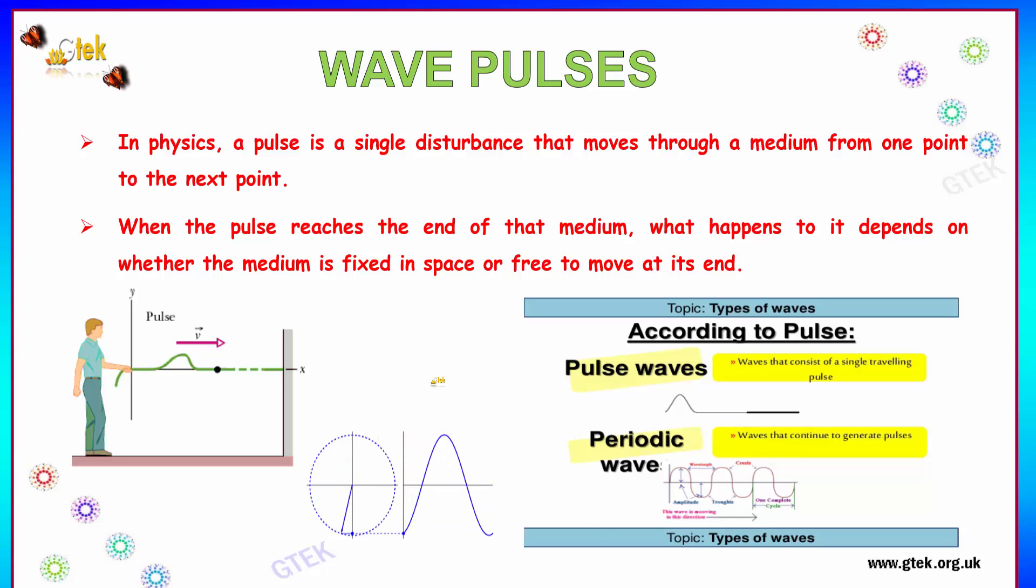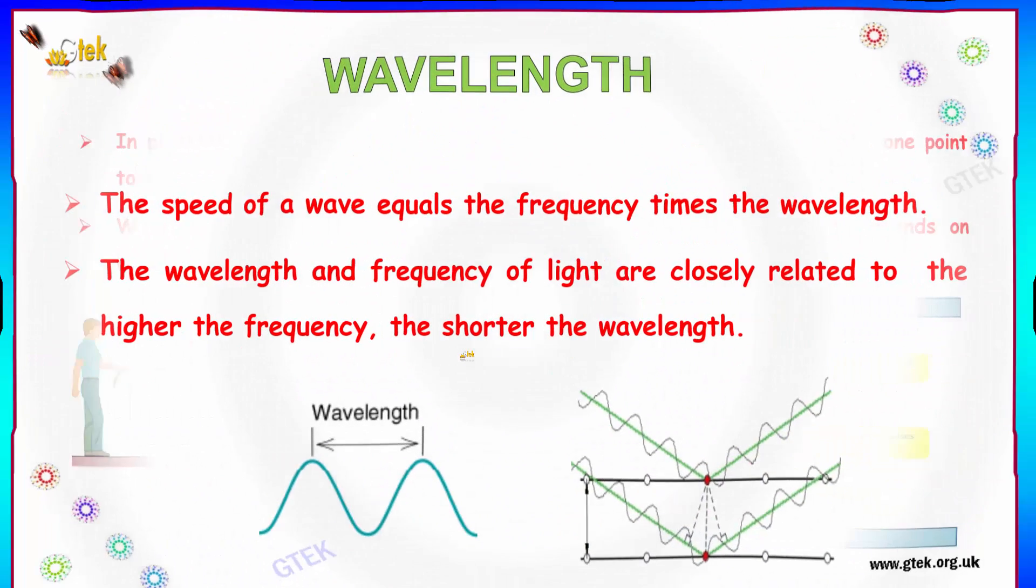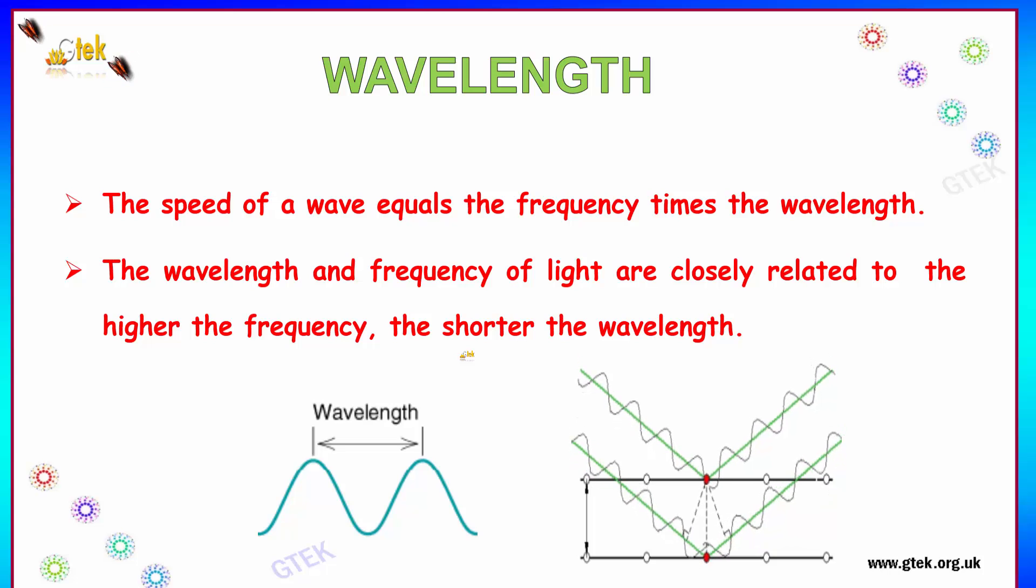Wave pulses are categorized in this way. Let's talk about wavelength. The speed of a wave equals the frequency times the wavelength. The wavelength and frequency of light are closely related; the higher the frequency, the shorter the wavelength. You can find the wavelength of a wave here, and this is the example depiction.